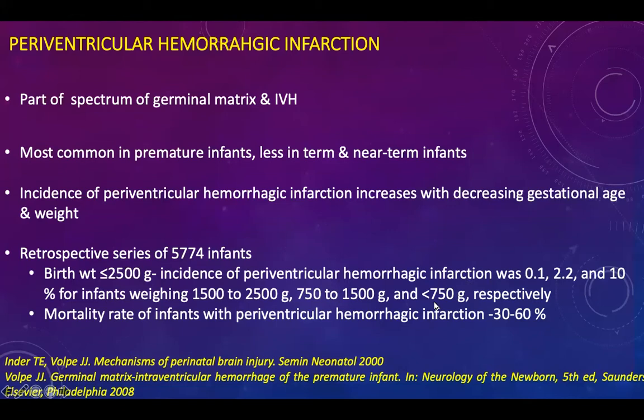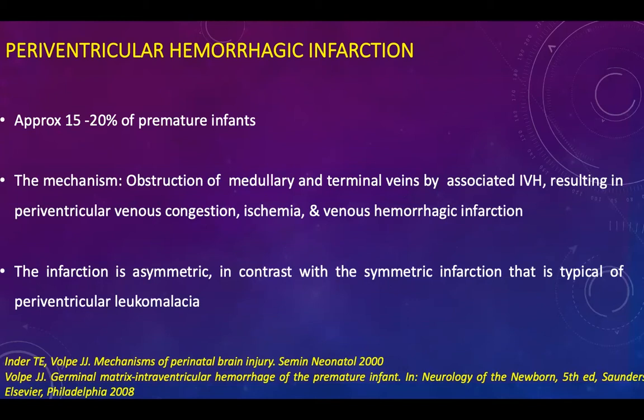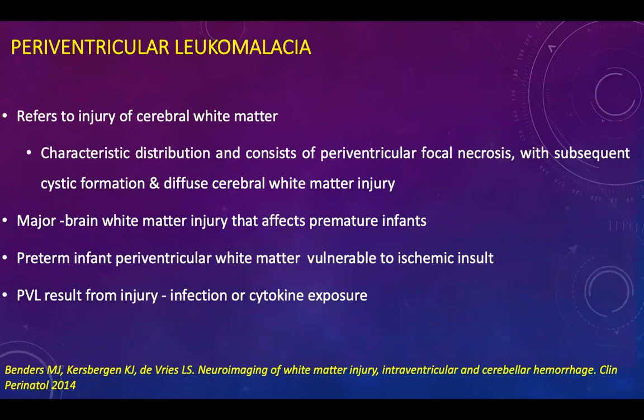In the group with birth weight less than 750 grams, periventricular hemorrhagic infarction was associated with 10% incidence. Mortality rate in this group can be up to 30 to 60%. It occurs in 15 to 20% of premature infants, and the infarction is asymmetric, in contrast to the symmetric infarction typical of periventricular leukomalacia.